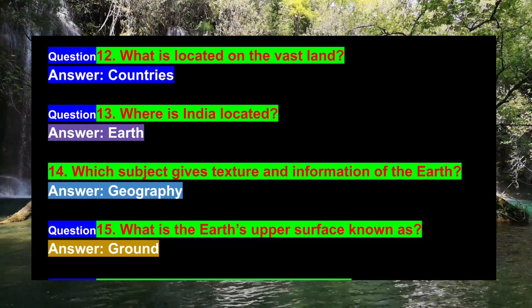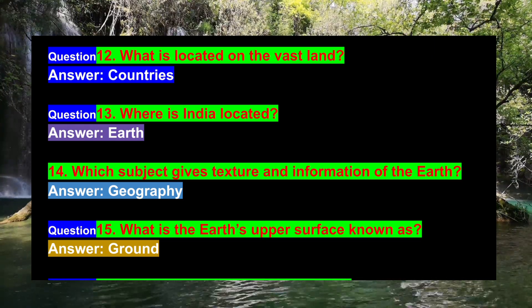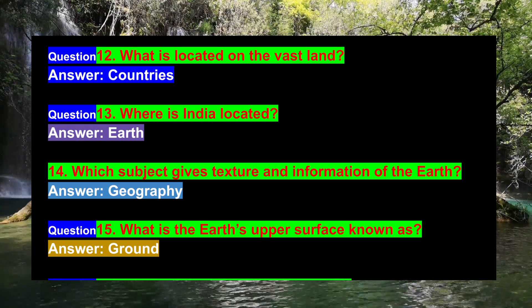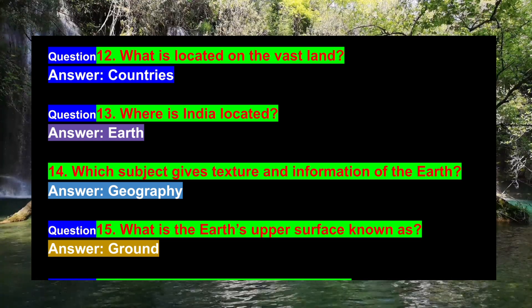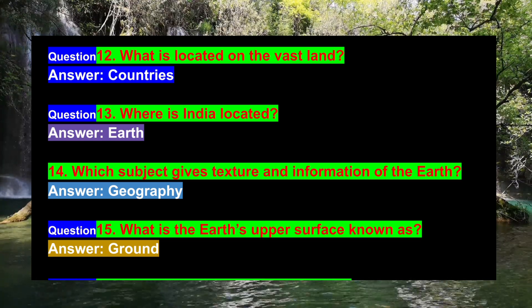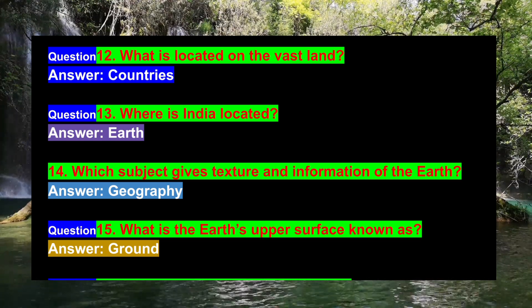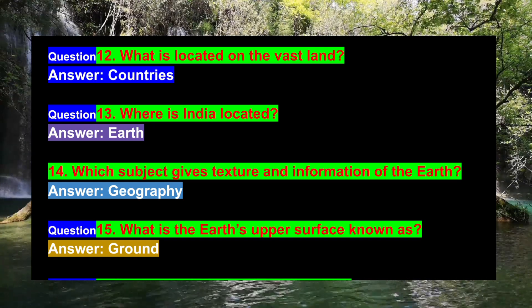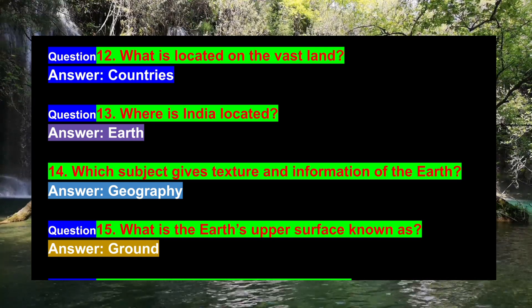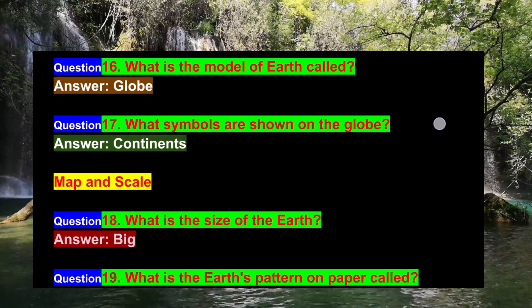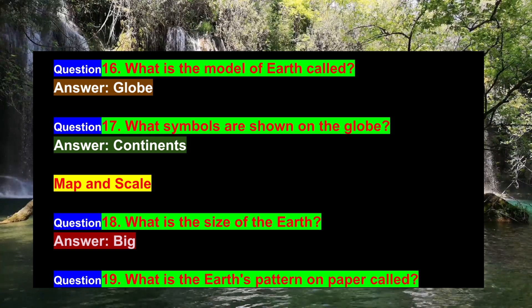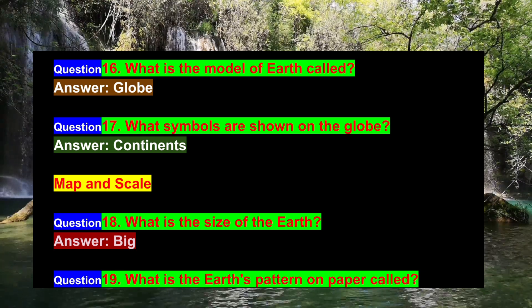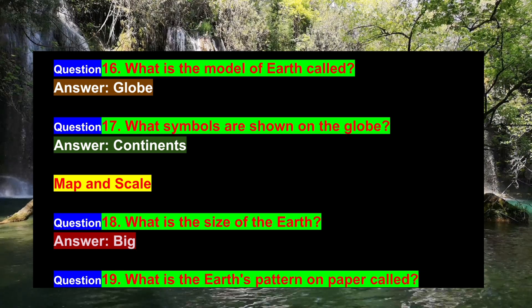Question 13: Where is India located? Answer: Earth. Question 14: Which subject gives texture and information of the Earth? Answer: Geography. Question 15: What is the Earth's upper surface known as? Answer: Ground. Question 16: What is the model of Earth called? Answer: Globe.